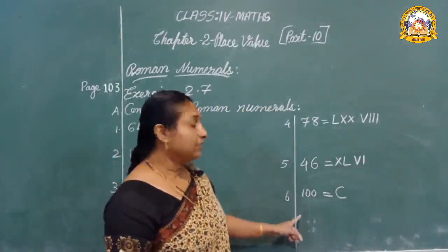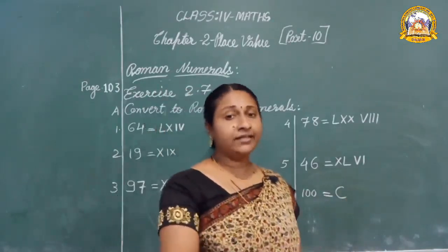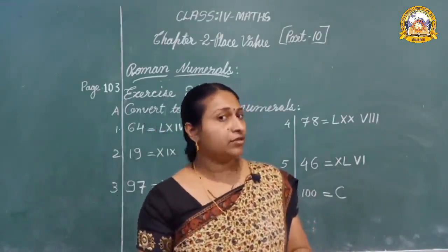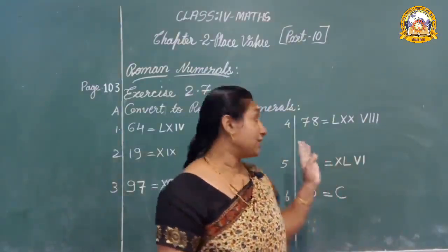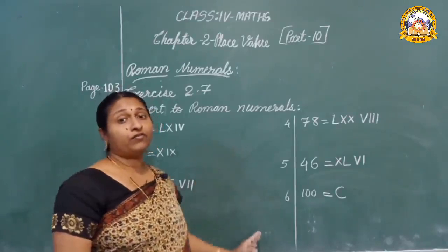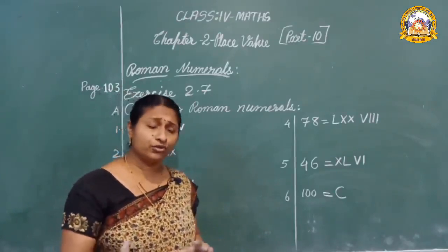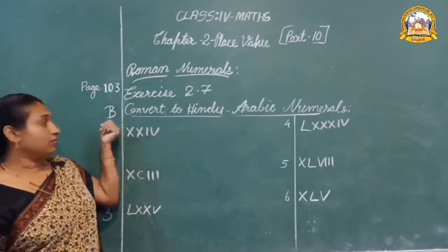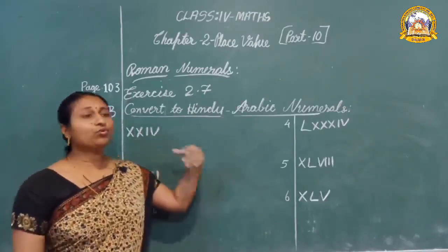Children, you should do the remaining work. Before that, you have to write the Roman numerals 1 to 100 in your notebook. And you have to do the full exercise 2.7 in your copy.